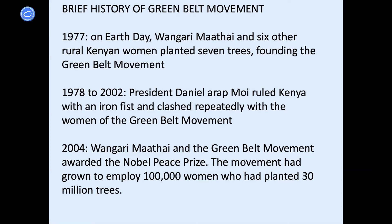This coincided with the rule of President Daniel Arap Moi in Kenya, an authoritarian leader who was pro-Western and supported by the West. He clashed repeatedly with the women of the Greenbelt movement. Then in 2004, to everybody's surprise including her own, Wangari Maathai and the Greenbelt movement were awarded the Nobel Peace Prize. The movement had grown to employ 100,000 women and plant 30 million trees in Kenya, and also in adjoining countries like Uganda and Tanzania. Maathai was the first African woman and the first environmentalist ever to receive the Peace Prize.